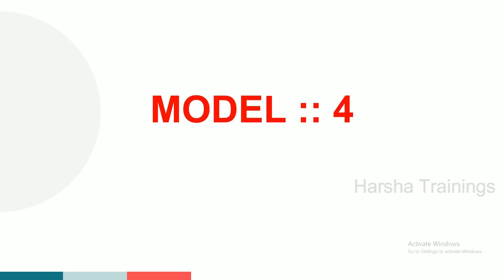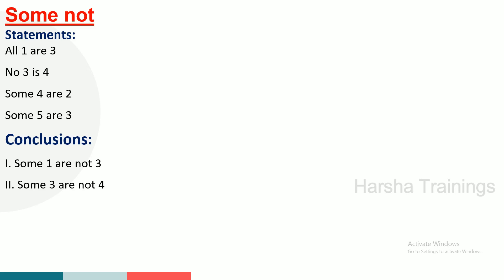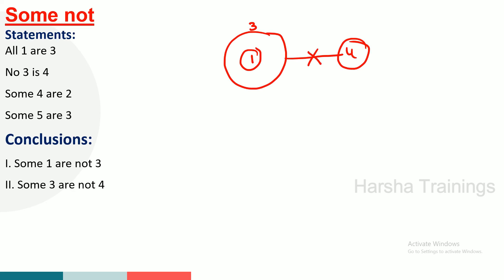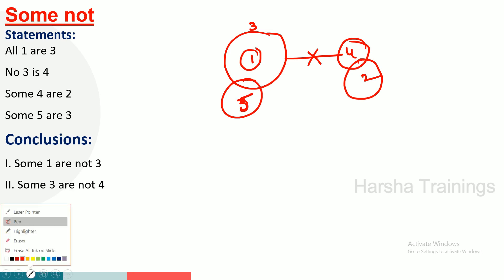Coming to model number 4 — some not problems, clearly explained. All 1s are 3s. So 1 or 3 — yes. Next: no 3 is 4, no 3 is 4. No 5 or 4. No rate.